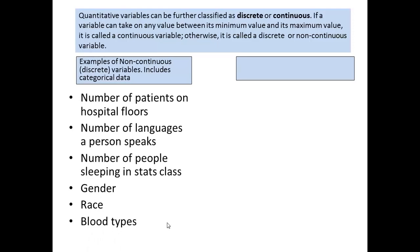Examples of non-continuous or discrete variables — sometimes also referred to as categorical — include the number of patients on different hospital floors, the number of languages a person speaks, number of people sleeping in a statistics class, gender, race, blood types, and diagnoses. All of these are categorical data. You can't average them together, you can't report a mean; you simply report the number and percent of each category.